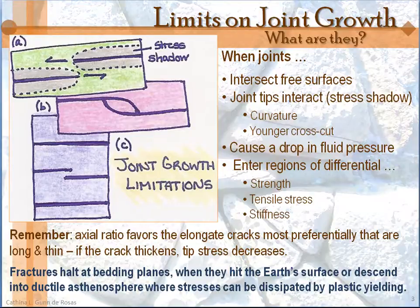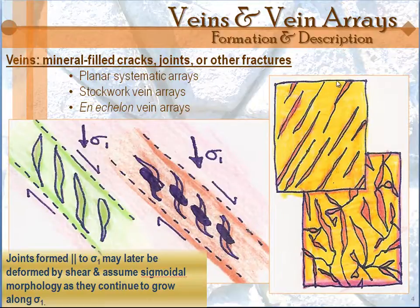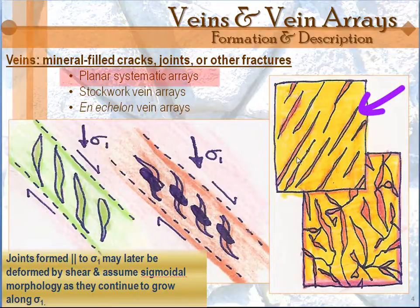The next thing we want to focus on is veins and vein arrays. The first kind of vein array we're going to talk about is a planar systematic array. Veins are mineral-filled joints or cracks or fractures or any kind of open space. These planar systematic arrays are fillers of pre-existing systematic joint sets.